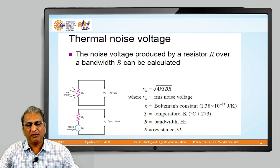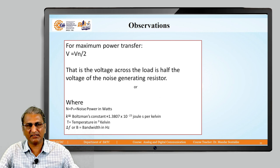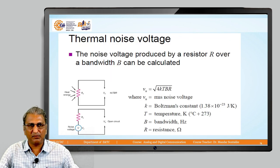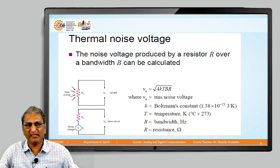The thermal noise voltage produced by a resistor R over a bandwidth B can be calculated by the formula V_n = √(4kTbR). The notations are: V_n is the RMS noise voltage, k is the Boltzmann constant, T is the temperature, B is the bandwidth in hertz, and R is the resistance in ohms.